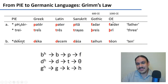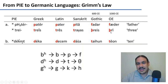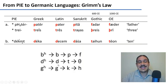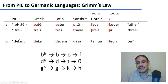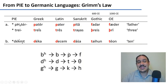Old English shows another lenition from stop to fricative for the t: 'tryas' in Sanskrit becomes 'three' in Old English. For d, what we have is a voicing shift from d to t — for example, out of Proto-Indo-European we have 'deka,' 'decem,' and 'dasha' in Greek, Latin, and Sanskrit, but in the Germanic languages Gothic and Old English we have 'taihun' and 'ten.' This chain of changes is called Grimm's Law.